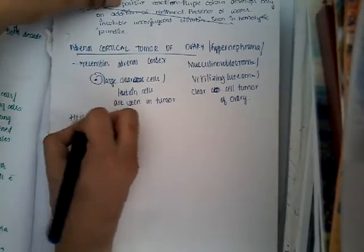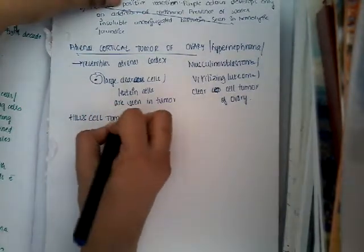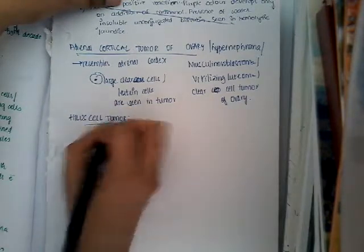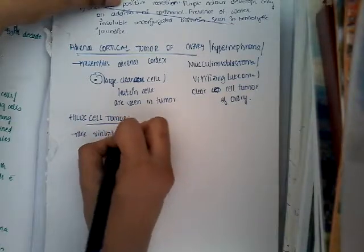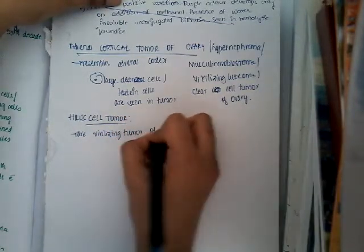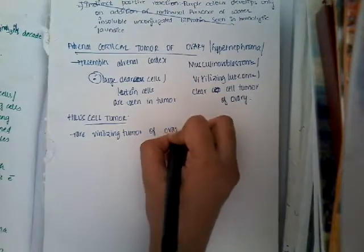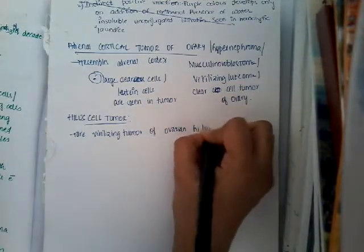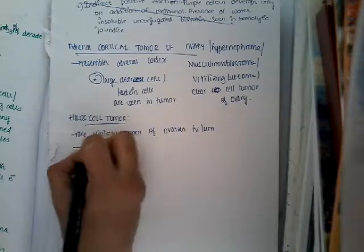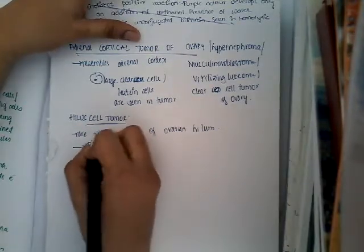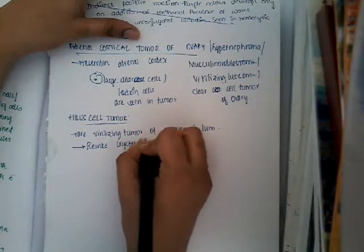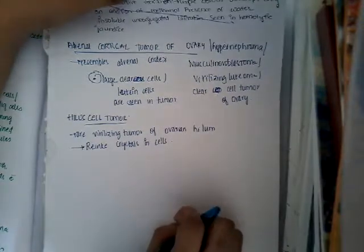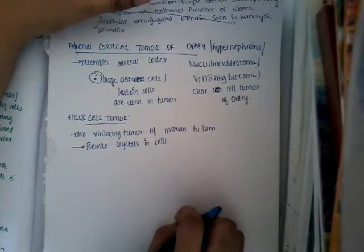The next type of tumor is the hilus cell tumor. This is a rare virilizing tumor of the ovarian hilum. The main characteristic feature of this tumor is the presence of Reinke crystals in the cells, which is the most important distinguishing feature of hilus cell tumors.